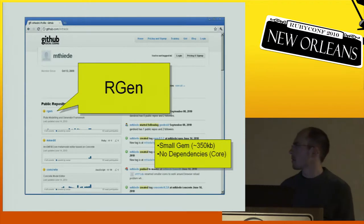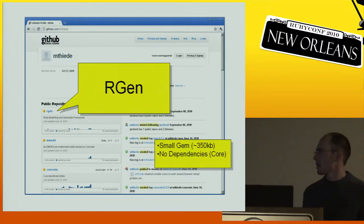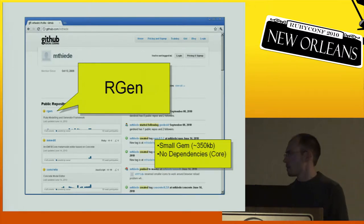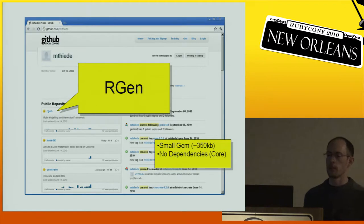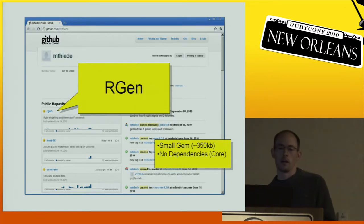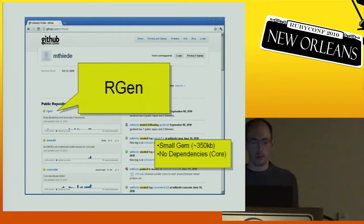Argen is available on GitHub. It's a gem. It's rather small, has basically no dependencies in the core. It's really lightweight and very flexible.